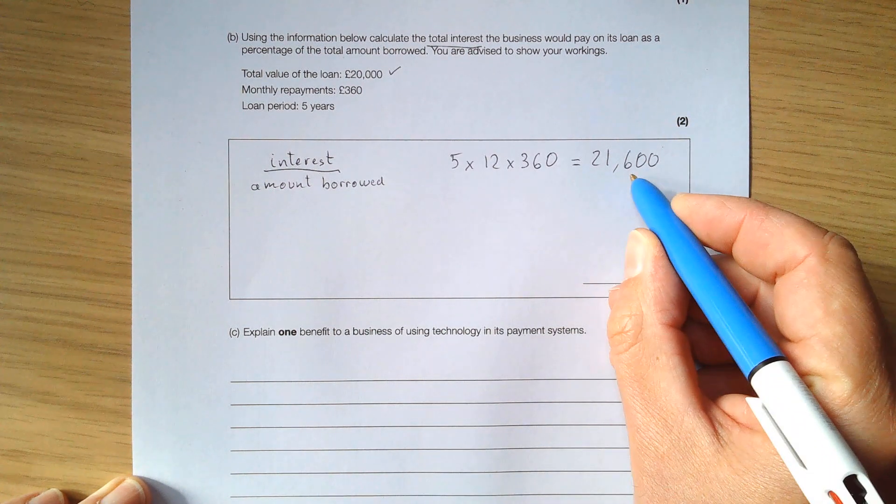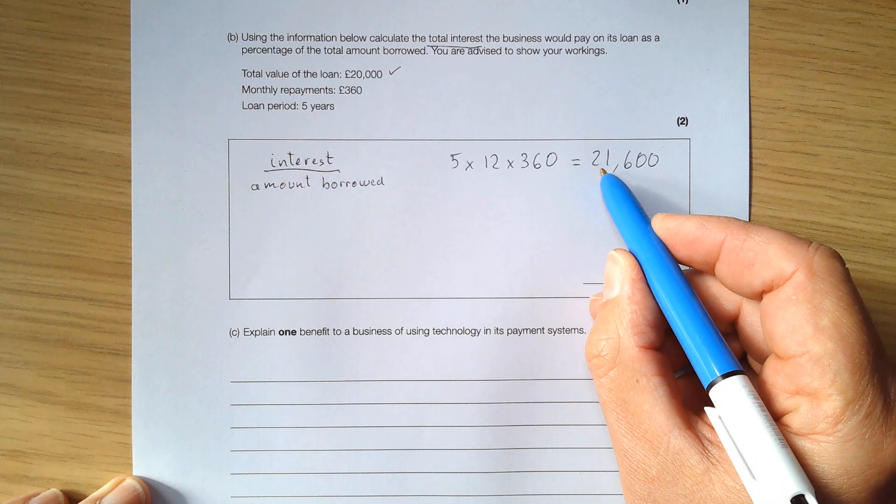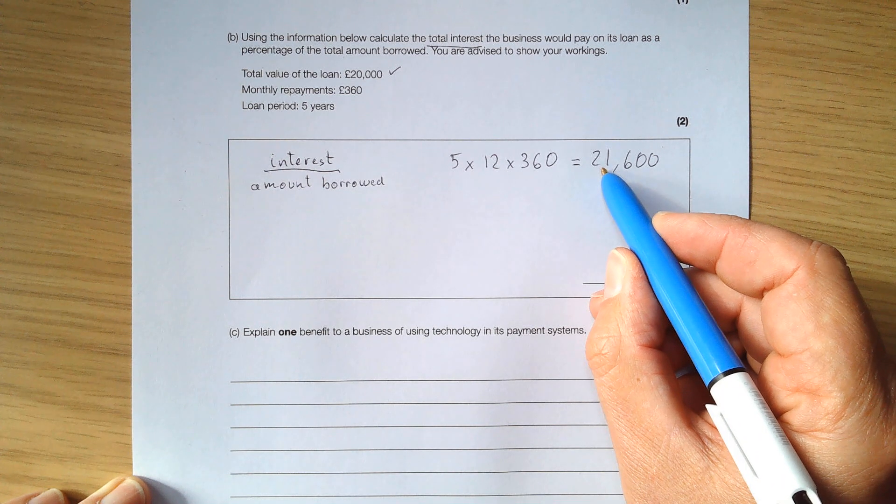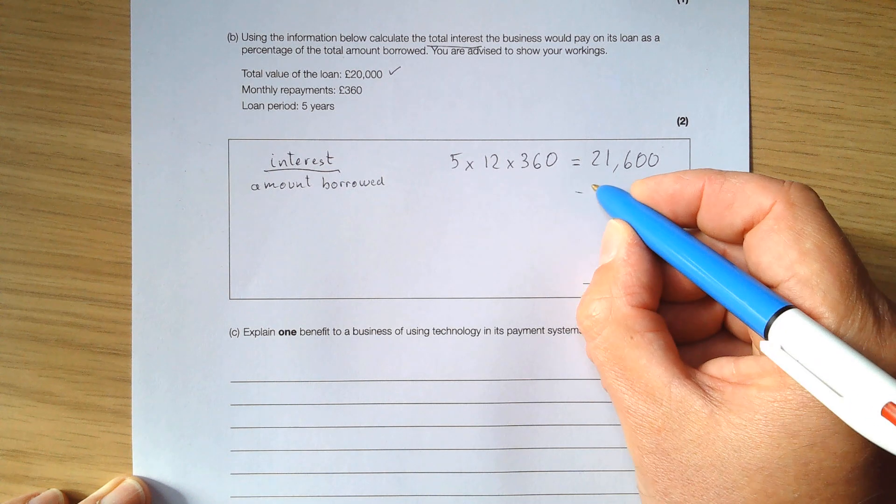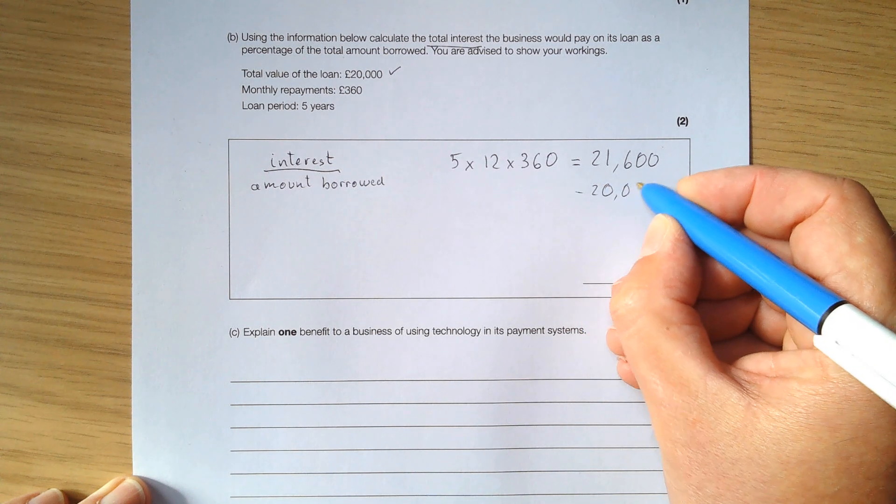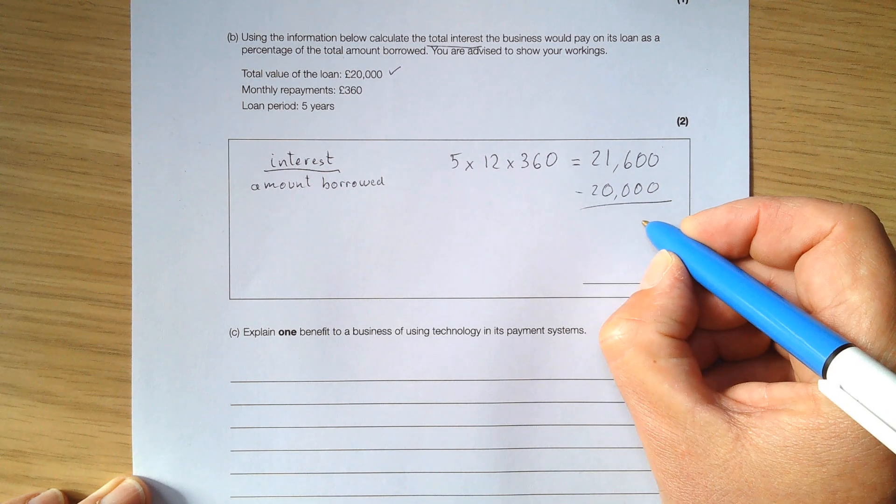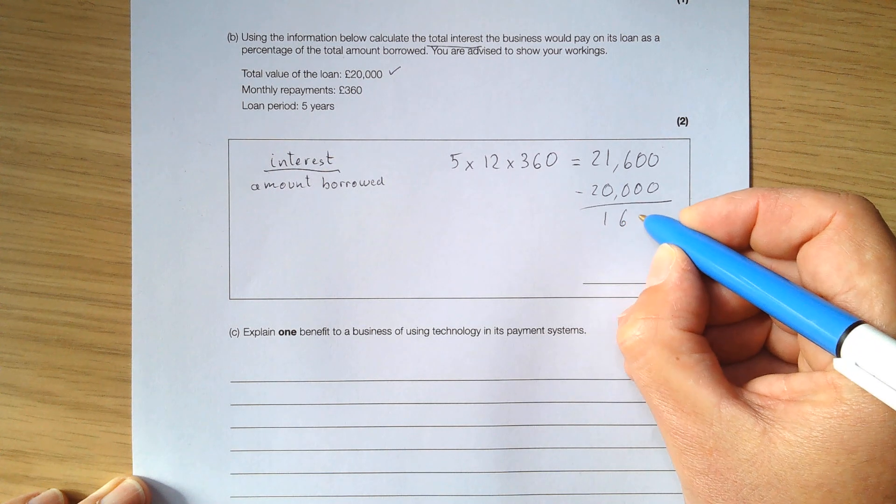Now this £21,600 is for the capital borrowed that you need to pay back plus the interest. So to calculate the interest, take away the £20,000 that were borrowed in the first place, and you've got £1,600.